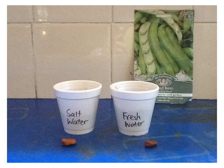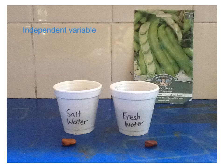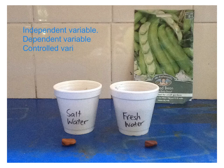Now it's your turn. In this experiment we're trying to find out whether beans grow faster in salt or fresh water. Can you work out what the independent variable is, what the dependent variable is, and you should be able to think of quite a long list of controlled variables. Remember: the independent variable is the factor you're changing on purpose, the dependent variable is what you are measuring, and the controlled variables are all the things you'll need to keep the same for it to be a fair test.